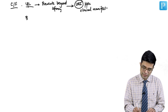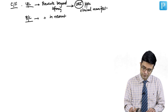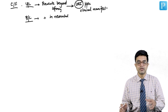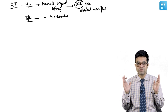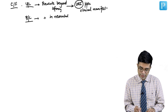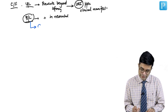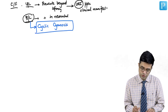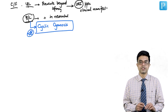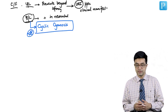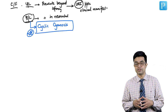Bilateral choanal atresia presents in the neonatal period. With both sides showing no airflow, the child will develop cyanosis. Bilateral choanal atresia presents with a classical finding called cyclic cyanosis. This is a potential MCQ: the condition associated with cyclic cyanosis is bilateral choanal atresia.